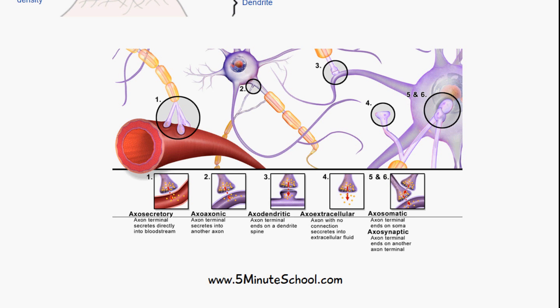Axosomatic synapses are where the axon terminal releases neurotransmitters onto the cell body or soma of another neuron. Axosynaptic synapses are where the axon terminal ends onto another axon terminal.